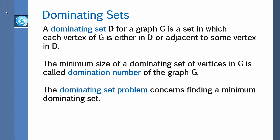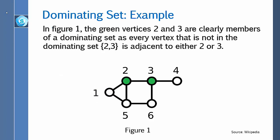A dominating set D for a graph G is a set in which each vertex of G is either in D or adjacent to some vertex in D. The minimum size of a dominating set of vertices in G is called the domination number of the graph G. The dominating set problem concerns finding a minimum dominating set.